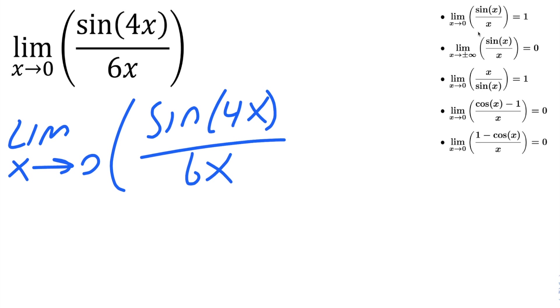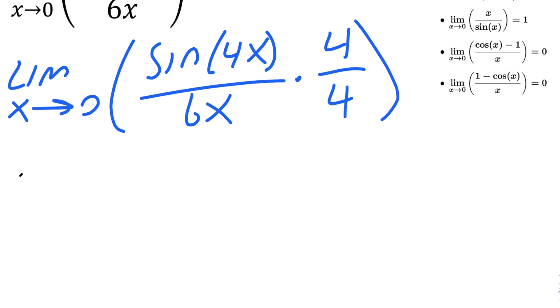then the denominator also needs to be 4x. So what we're going to do is actually multiply the numerator and the denominator by 4. And I'll show you why we're doing this. And so once we do that, we can actually rewrite what we have. And what we could do is have our sine 4x in the numerator. And in the denominator, instead of saying 6x, we're going to put a 4x.